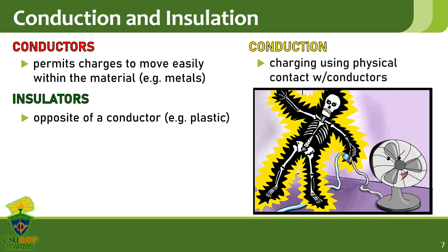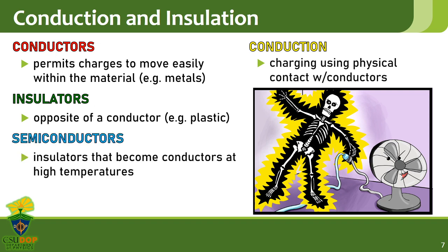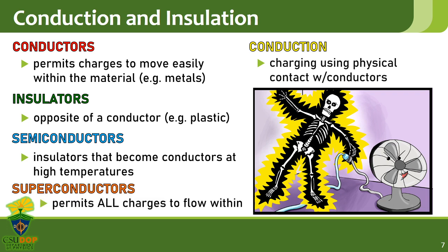There are also materials with properties that are in between conductors and insulators, and these are called semiconductors. They are insulators at room temperatures but can become conductors at very high temperatures. This is the reason why semiconductors are used in computer processor chips since these devices operate at high temperatures. Lastly, there are materials which permit the flow of all charges without any resistance, and these are called superconductors. They are the perfect form of conductors and provide no loss in energy. Currently, superconductivity only happens at very low temperatures. If room temperature superconductors are developed, then you won't have to pay for the generation or transmission losses in your electricity bills.